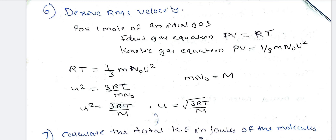We will now derive RMS velocity. For one mole of an ideal gas, the ideal gas equation is PV = RT. When n = 1, PV = RT, which comes from the general form PV = nRT.